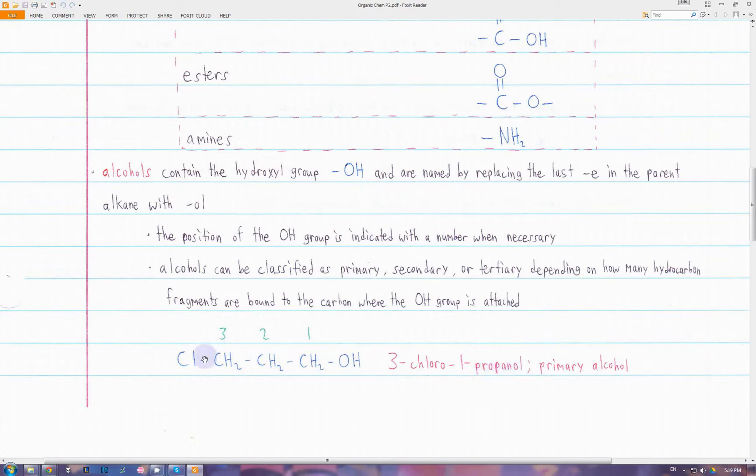The OH group is attached at position one, so the base of this alcohol becomes 1-propanol. Then we have a substituent, chlorine, at position three, so the name is 3-chloro-1-propanol. We can classify this as a primary alcohol by looking at how many hydrocarbon fragments are bonded to this carbon where the OH group is attached. There's only one chain bonded to this carbon, so it is a primary alcohol.